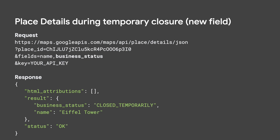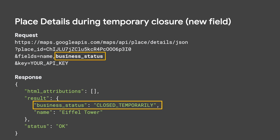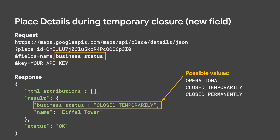In order to represent more than just two states, we have created a new enum field, business_status. This enum has three possible values: Operational, Closed Temporarily, and Closed Permanently.